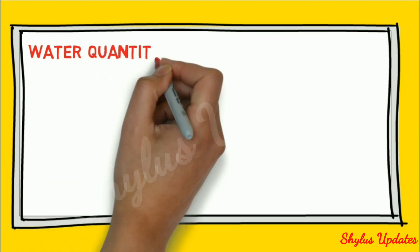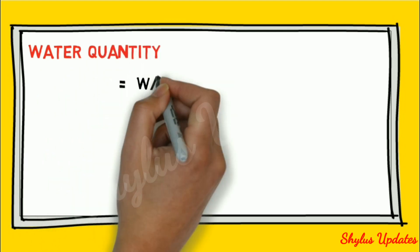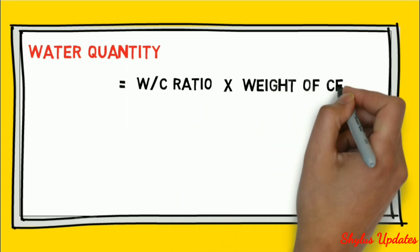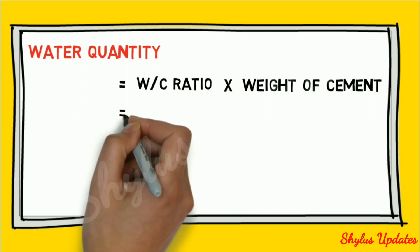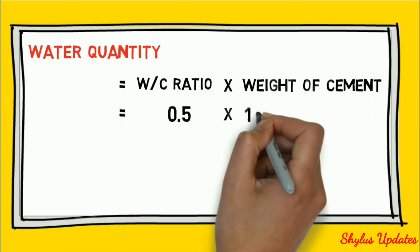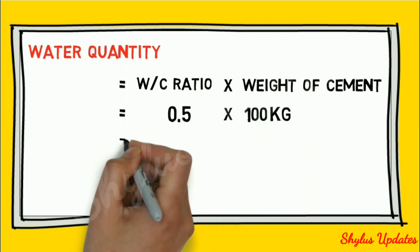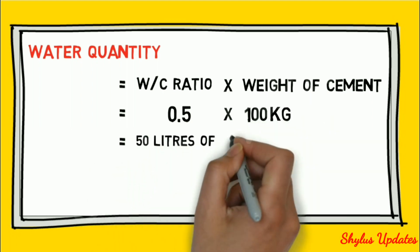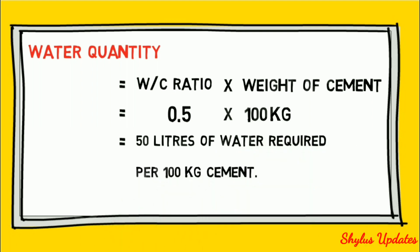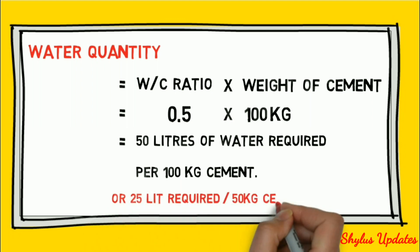Water quantity equals water-cement ratio times weight of cement, equals 0.5 times 100 kg. The answer is 50 litres of water required per 100 kg cement, or you can say 25 litre required per 50 kg cement bag.